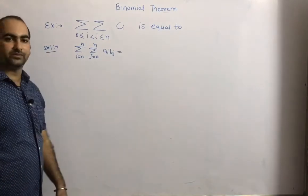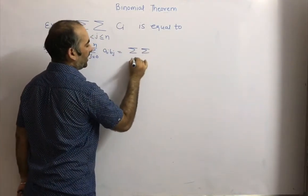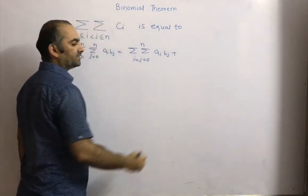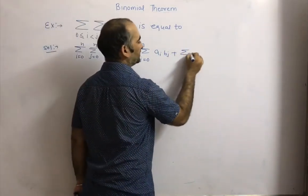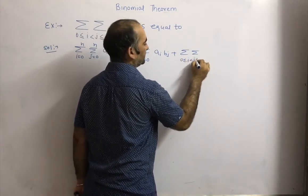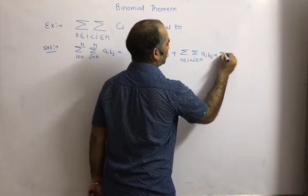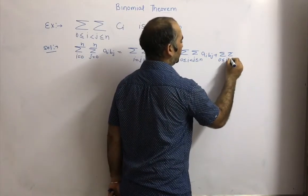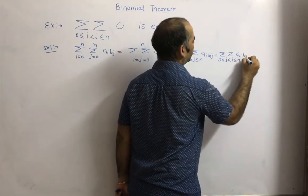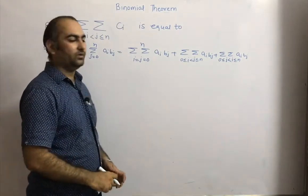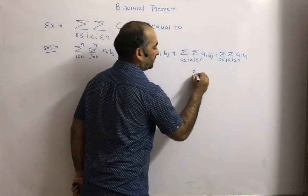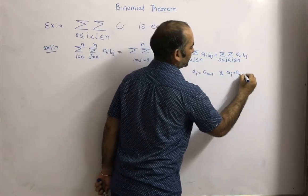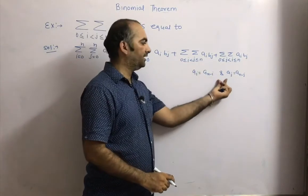The three types are: first, sigma sigma where i=j from 0 to n of a_i·b_j; second, sigma sigma where 0 ≤ i < j ≤ n of a_i·b_j; and third, sigma sigma where 0 ≤ j < i ≤ n of a_i·b_j. Now if a_i and b_j are symmetric — that is, if a_i = a_{n-i} and a_j = a_{n-j} — then both series are symmetrical.